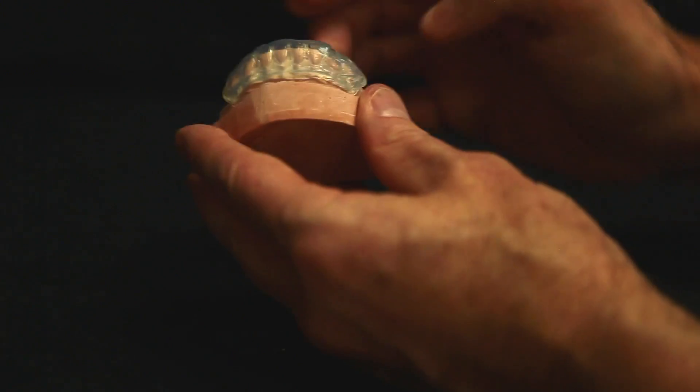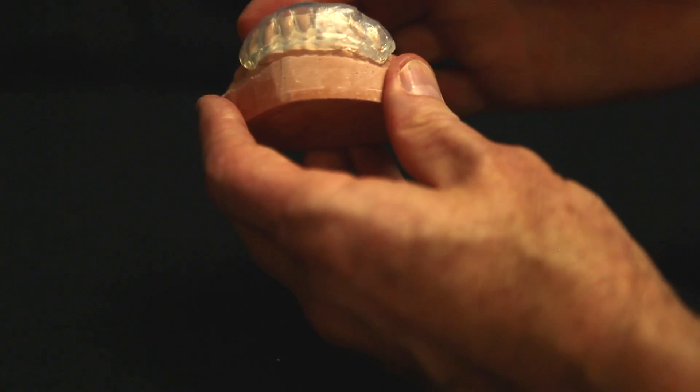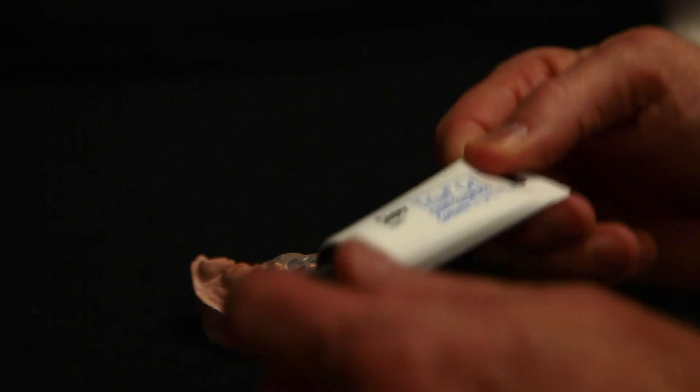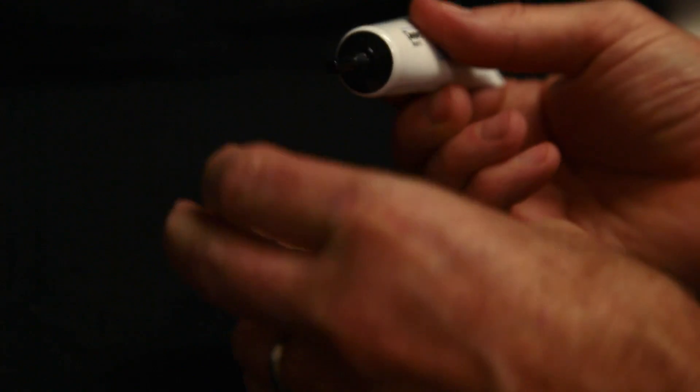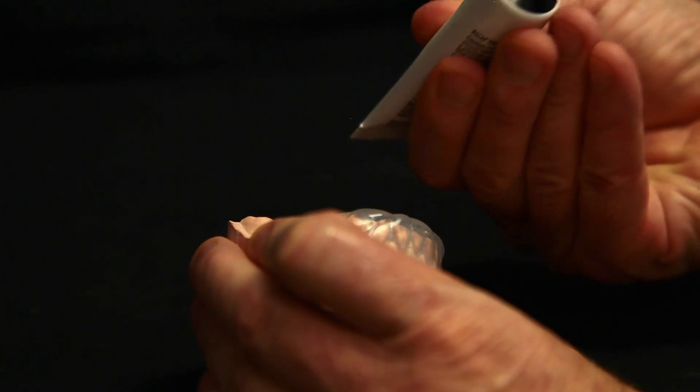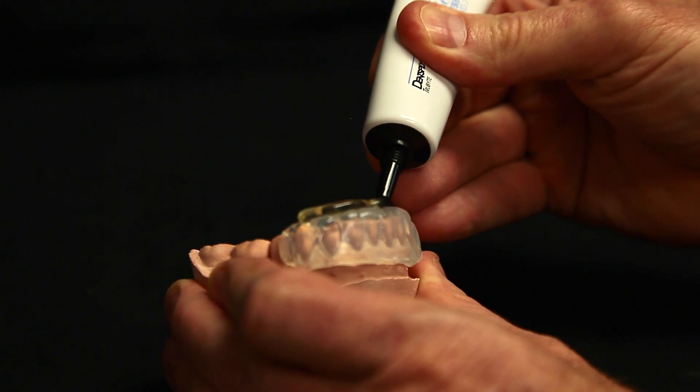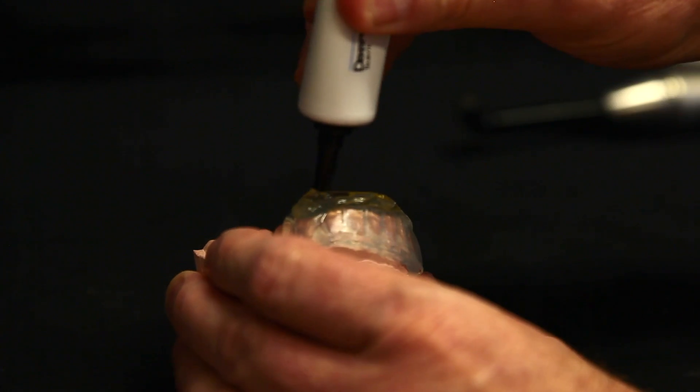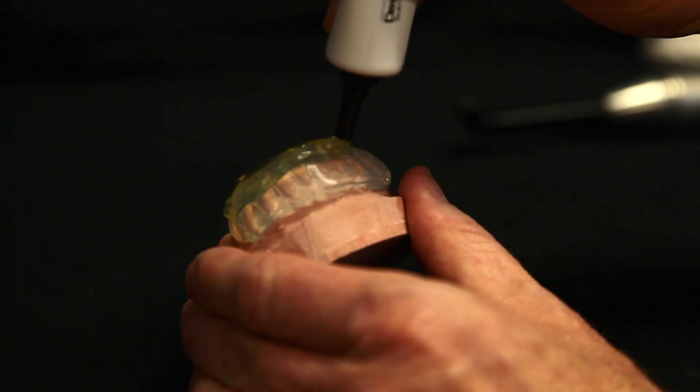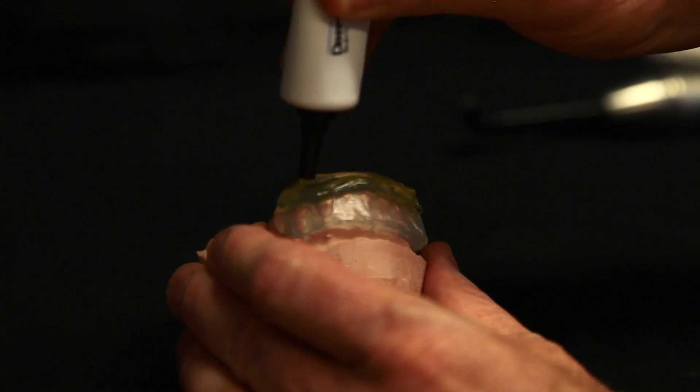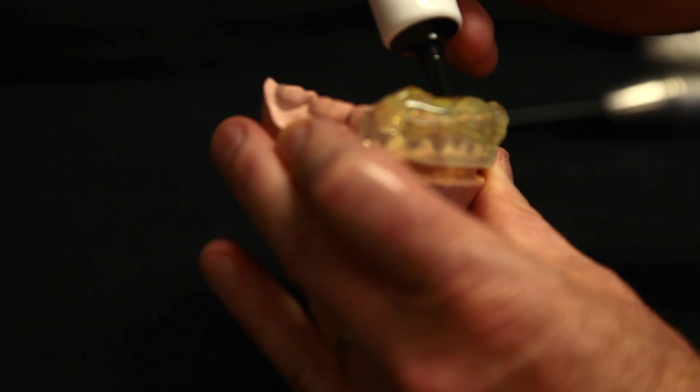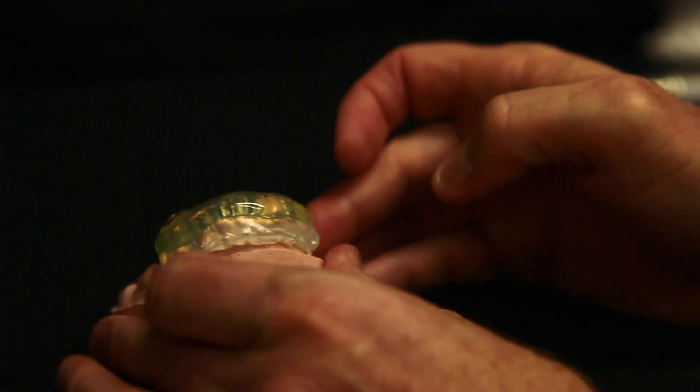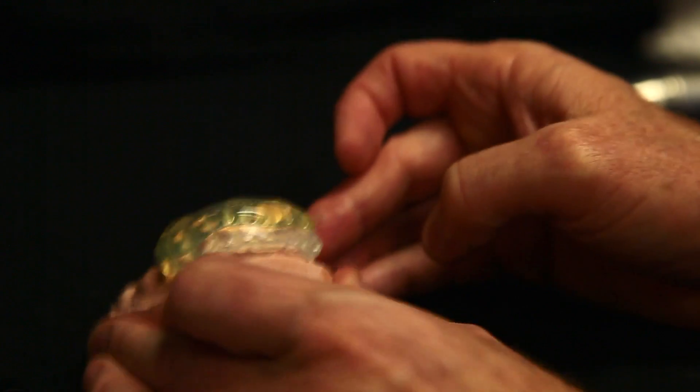So what we do is we're going to go ahead and now fabricate a hard shell matrix over the top of this. We're going to be using Triad Gel, Clear Colorless by Dentsply. And what you do is we're just going to flow a thin layer over it. And this is kind of like thick honey, this material. So you get it here. And then you can just lightly tap it or if you happen to have a lab vibrator, you can go ahead and do that.